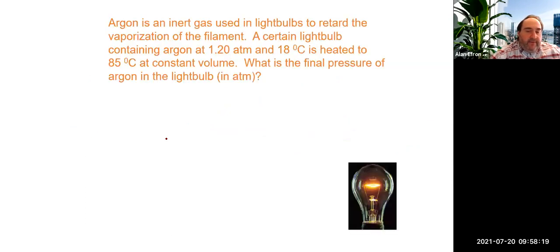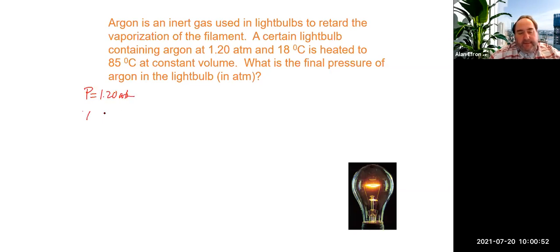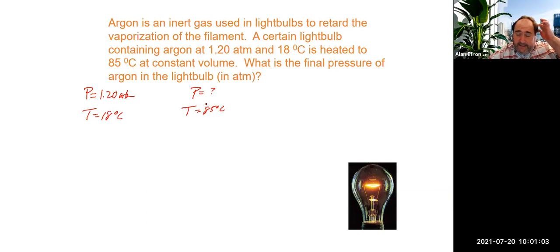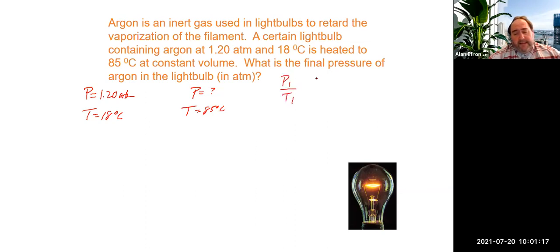Let's try another one: a light bulb at 1.2 atmospheres and 18 degrees Celsius — what is the pressure at 85 degrees Celsius? We have a pressure of 1.2 atmospheres, a temperature of 18 degrees Celsius, another temperature at 85 degrees Celsius, and we're looking for a new pressure. Since there are no volumes, Charles's Law and Boyle's Law won't work, so we use Gay-Lussac's Law: P1 over T1 equals P2 over T2, at constant volume.